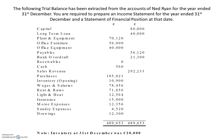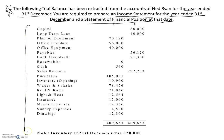Ned Ryan, final accounts. Starting at the top of the question here, we will read what we are asked to do. The following trial balance has been extracted from the accounts of Ned Ryan for the year ended 31st of December. We are required to prepare an income statement for the year ended 31st of December and a statement of financial position at that date. From this information in the trial balance and the note at the end, we are going to produce an income statement and a statement of financial position.